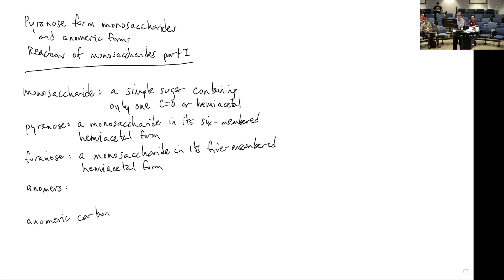Two of the forms that monosaccharides can take are called the pyranose form and the furanose form. We're not going to concern ourselves very much with the furanose forms — I'll show them so you can see what they look like, but they're not used very much. We will need to know something about sugars in their pyranose form, and I'll distinguish those for you shortly.